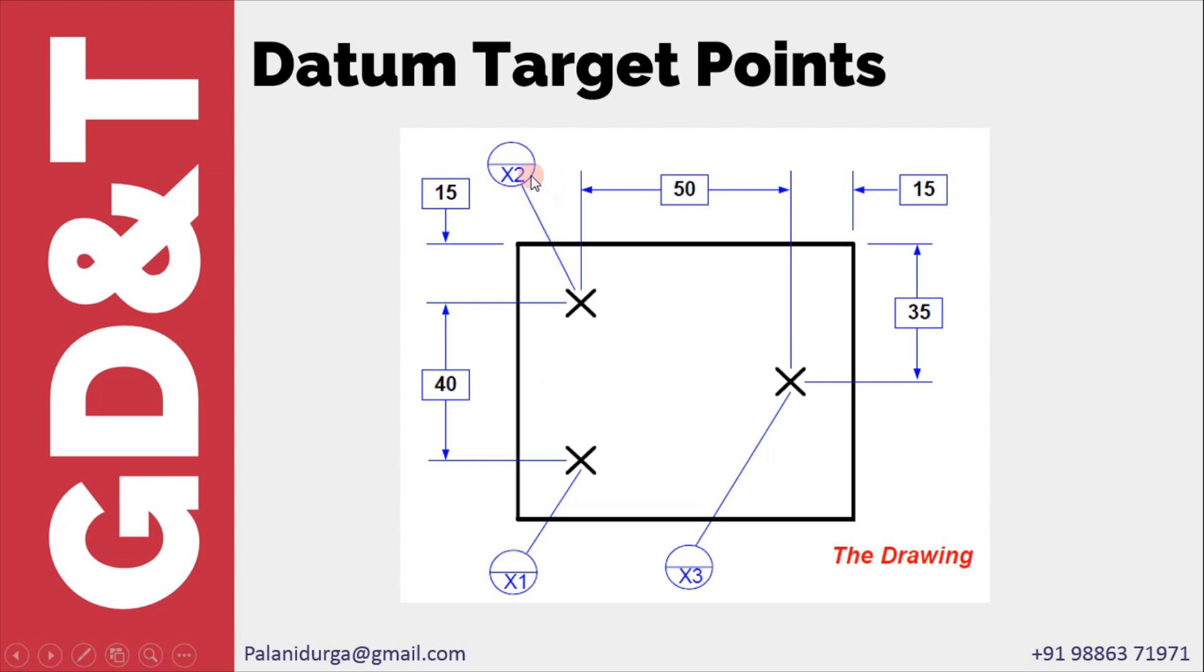Whenever we use datum targets, we use a new symbol called the datum target identification symbol. This datum target identification symbol will be divided into two halves by a horizontal line. The second half of the horizontal line tells the identification of the point number or line number. The first half of the identification symbol will be always empty for datum target points and lines.